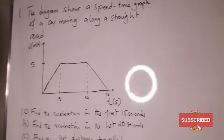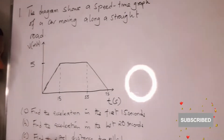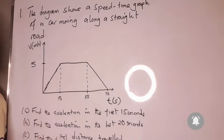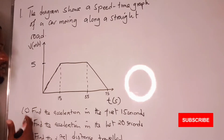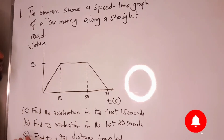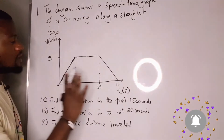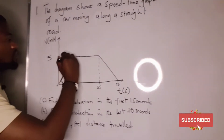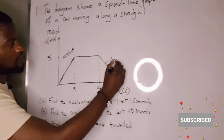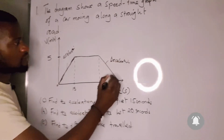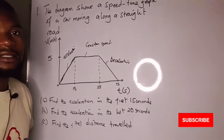Before we calculate the acceleration and the total distance, we need to interpret this graph. When you look at the diagram, we have this slope which shows acceleration, then we also have this part which shows deceleration, and this part which shows constant speed.